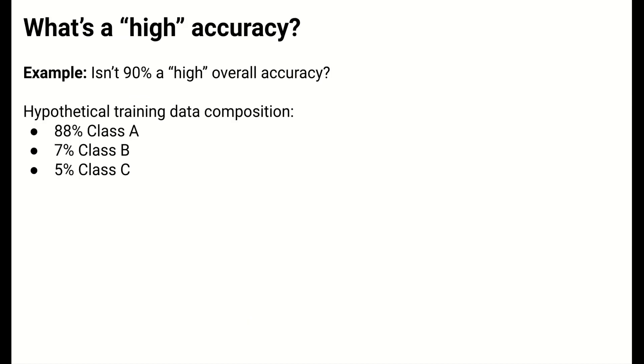One last note is about how we can calibrate our interpretation of high versus low values of these evaluation metrics. To motivate this, we might see an estimated overall test accuracy of 90% and be impressed that it seems pretty high. However, we need to calibrate that perception by looking at the class distribution in our training data.